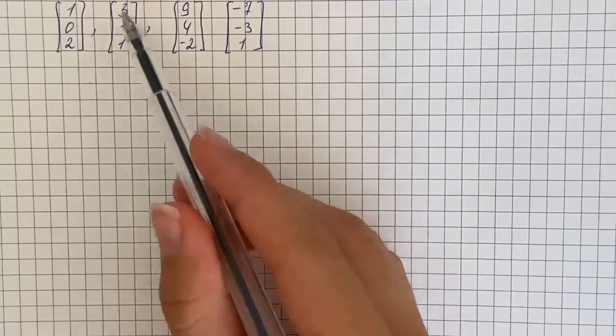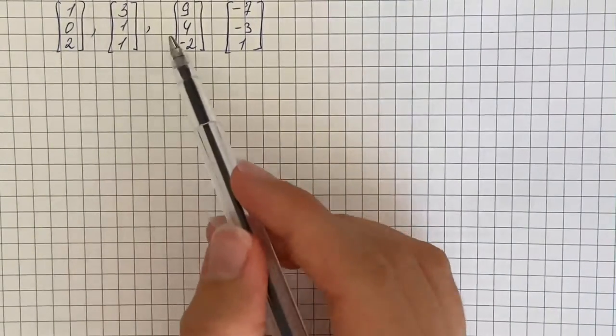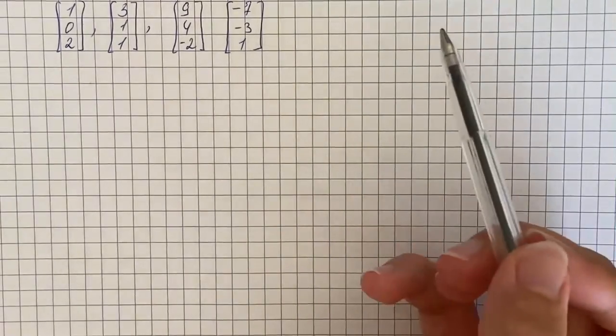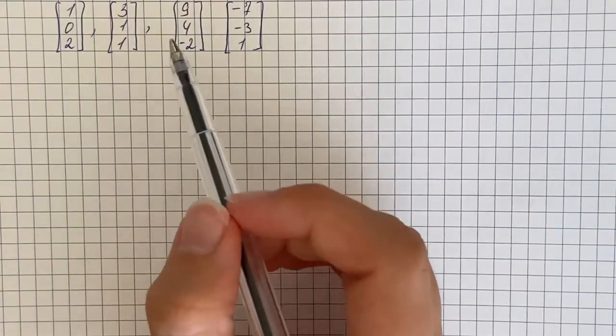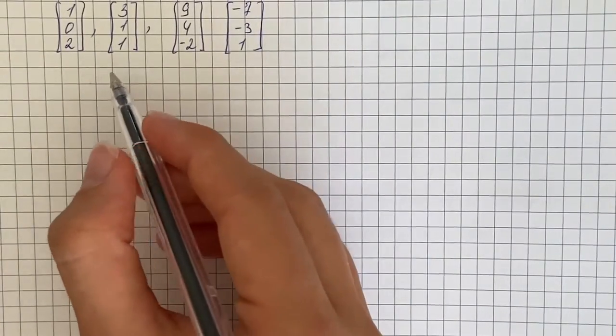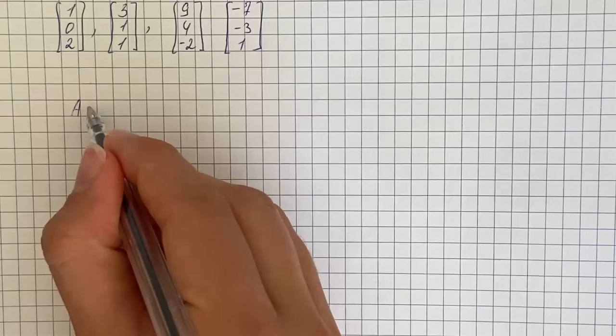Finding the dimension for the subspace spanned by these vectors is the same thing as finding the dimension for the column space of a matrix. So what we would do here is take our vectors and write them as a coefficient matrix.